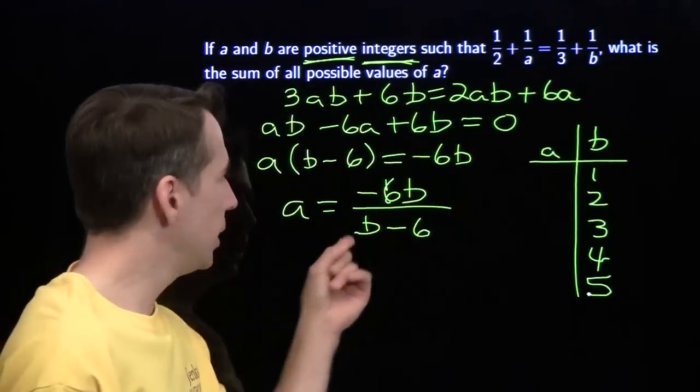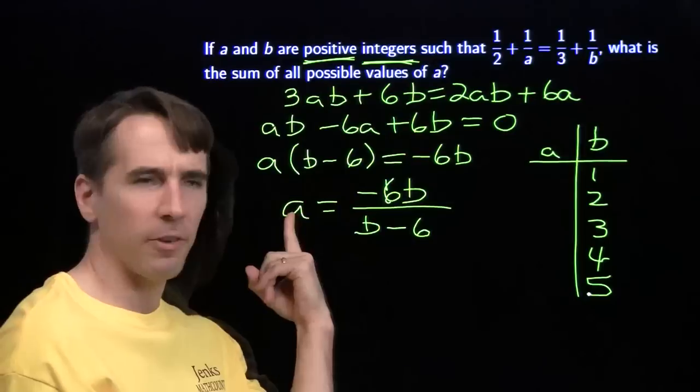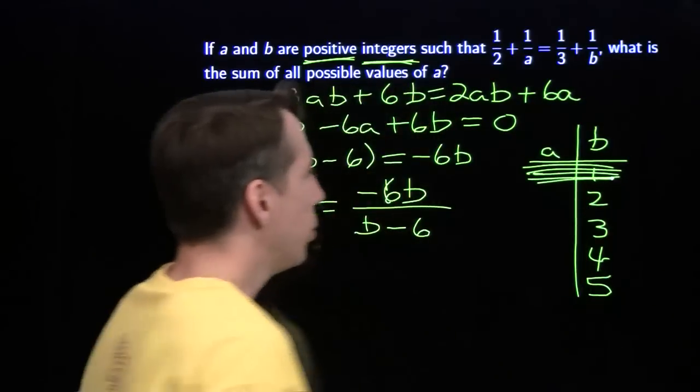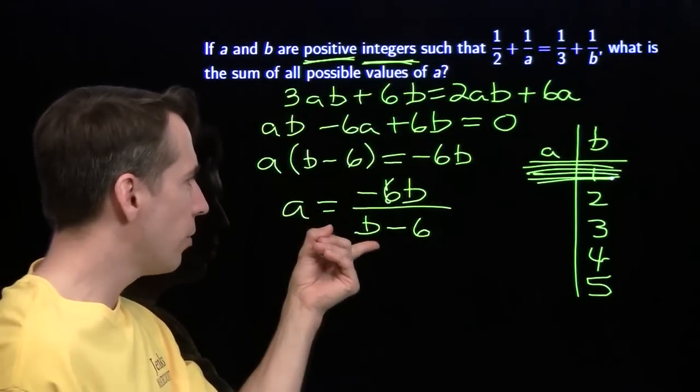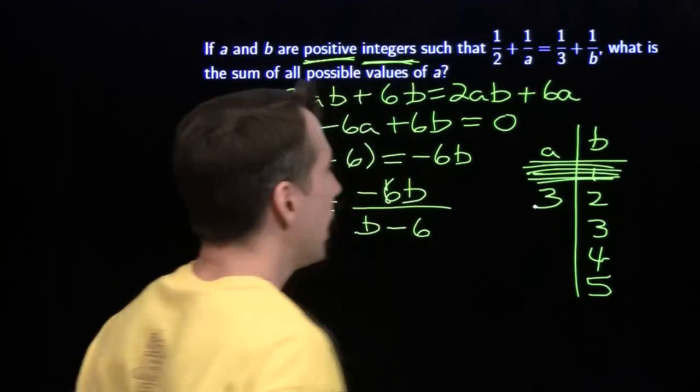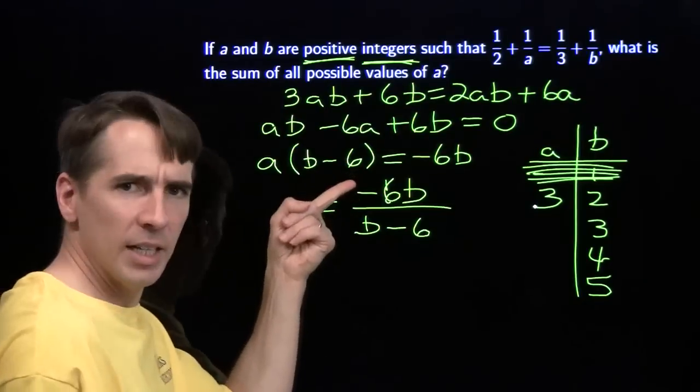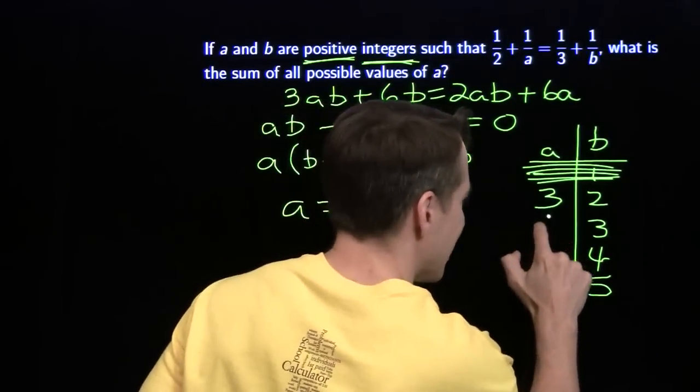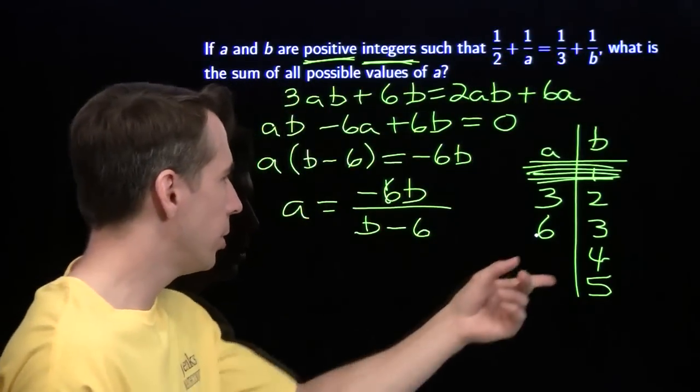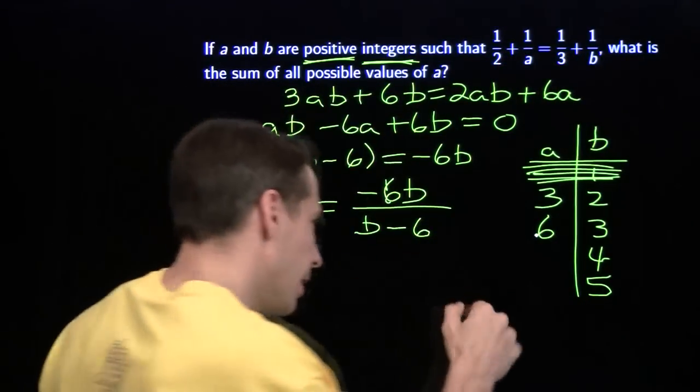If we put in b equals 1, the top is negative 6, the bottom is negative 5. That makes a a fraction. No good. Put in b is 2, the top is negative 12, the bottom is negative 4. That makes a equal to 3, and that makes sense. Put in b equals 3, we get negative 18 divided by negative 3, that is 6. Put in 4, we get negative 24 divided by negative 2, that is 12.